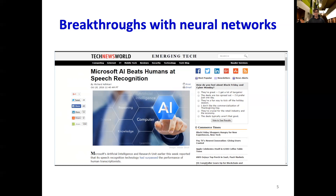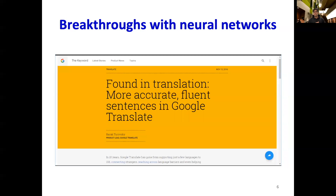YouTube may even be using this technology to generate captions for this very video. Another extremely useful application is translating text from one language to another. Also in 2016, Google announced that it was moving its Google Translate platform from using statistical machine translation modules to neural machine translation modules because of their ability to generate more accurate, fluent translations. So the next time you find yourself using Google Translate in a foreign country, I'm sure you will think back to Professor Bhikshar's upcoming lectures in this course.